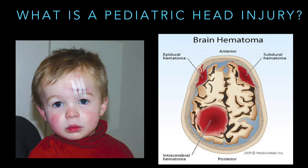The primary injury is the direct or indirect result of a mechanism causing an injury. Secondary injuries are those injuries or insults that result from the primary event, and include marked swelling, increased endocranial pressure, and systemic cascading events.